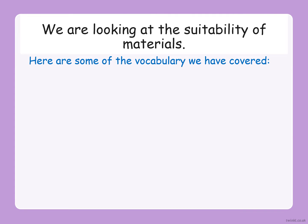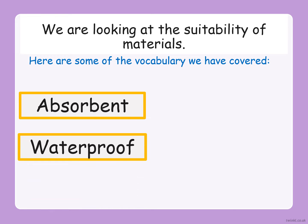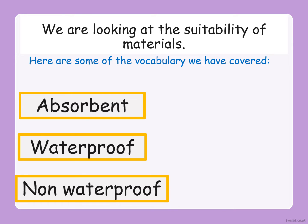This time we are looking at the suitability of materials. Here are some of the vocabulary that we have covered so far. The first one is absorbent, and absorbent means when a material can soak up liquid. The second one is waterproof, and waterproof means when a material does not let water through — it does not let water leak. It keeps the water nice and safe within the material. Then we have non-waterproof, and that means the material is not waterproof, so it does let water through. If you were to put water or a liquid through the material, the water or liquid will drip through.